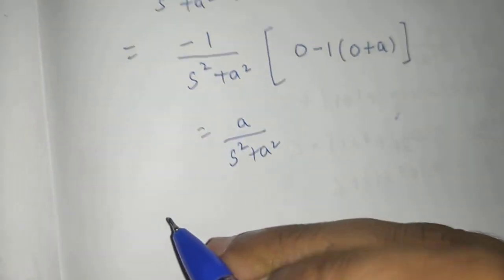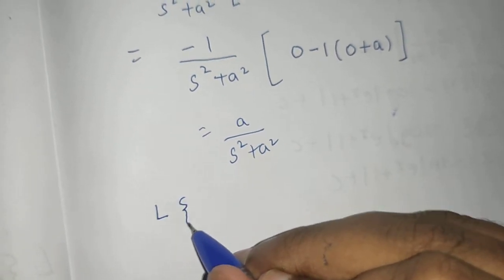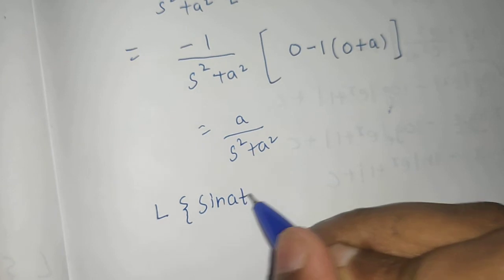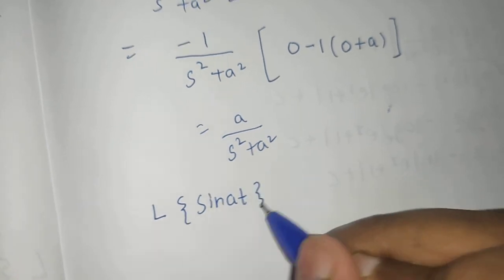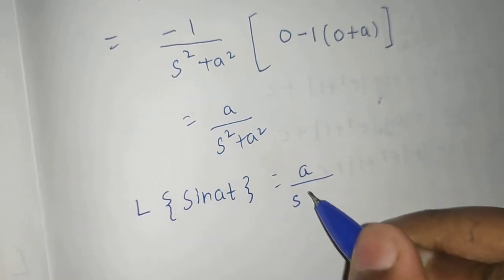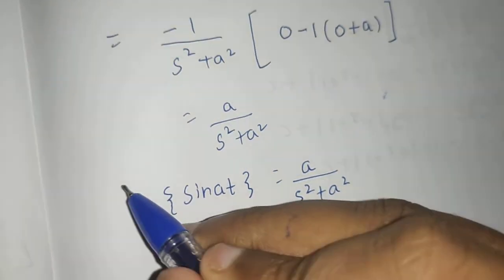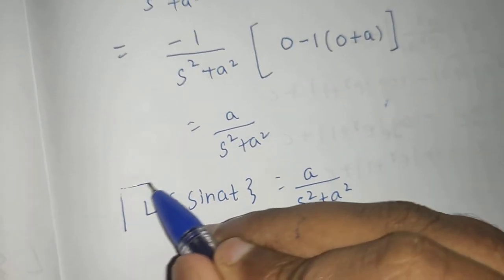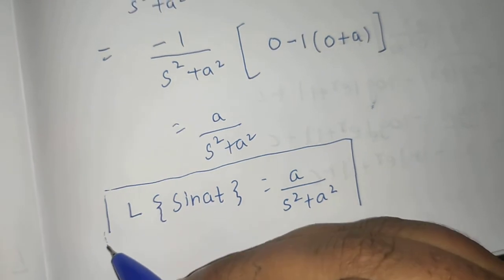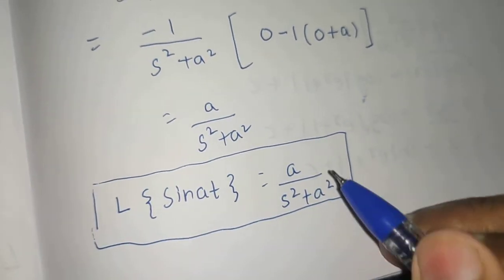So finally what we are getting is: the Laplace of sine at equals a divided by s squared plus a squared. So I hope you understood this problem.